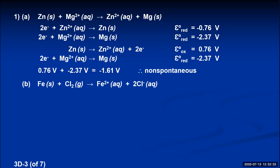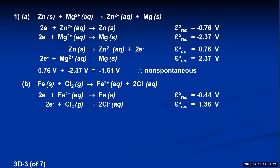Part B: you have to look up two half reactions — the two reduction half reactions in the table that will allow you to come up with this reaction. We need a reduction reaction with iron and iron 2+, and another with chlorine and chloride ions. The iron reduction potential is negative 0.44, and the chlorine reduction potential is 1.36.